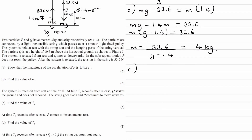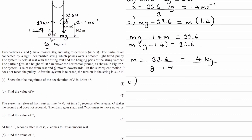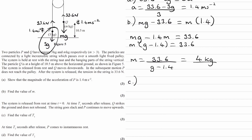On to part C. The system is released from rest at time T equals 0. At time T1 after release, Q strikes the ground and does not rebound. Q travels downwards a distance of 10.5 meters and hits the ground, while P will go up by the same distance. The string then goes slack and P continues to move upwards, because it has some velocity when Q hits the ground. As Q is no longer pulling down on the string it becomes loose, and P continues upward with only its weight acting on it, which slows it down until it eventually stops. We're just looking at the time from when the system is released to when Q strikes the ground.